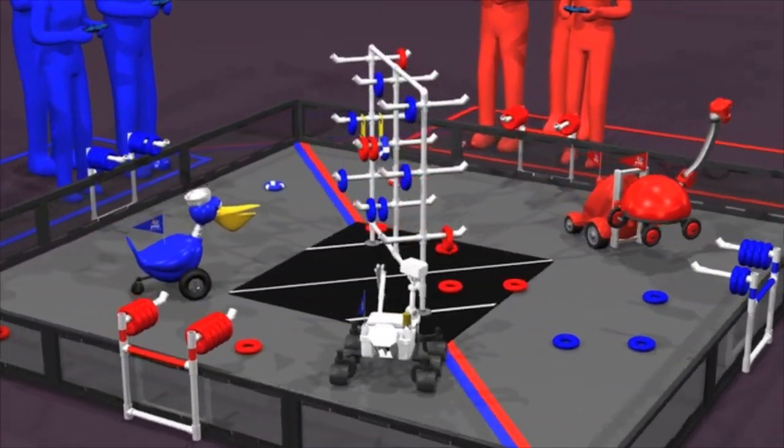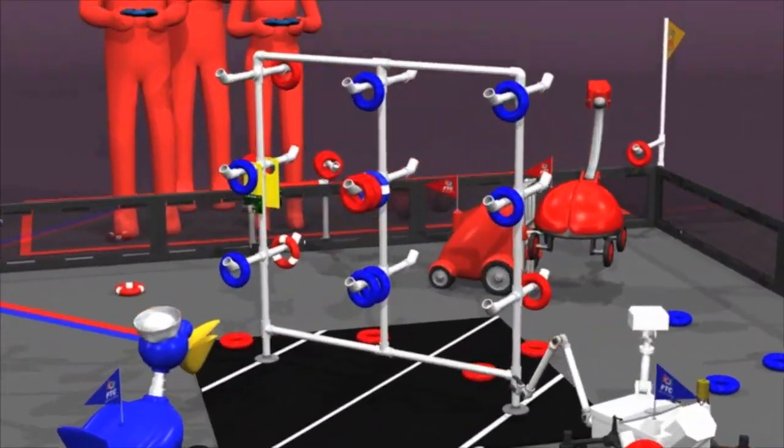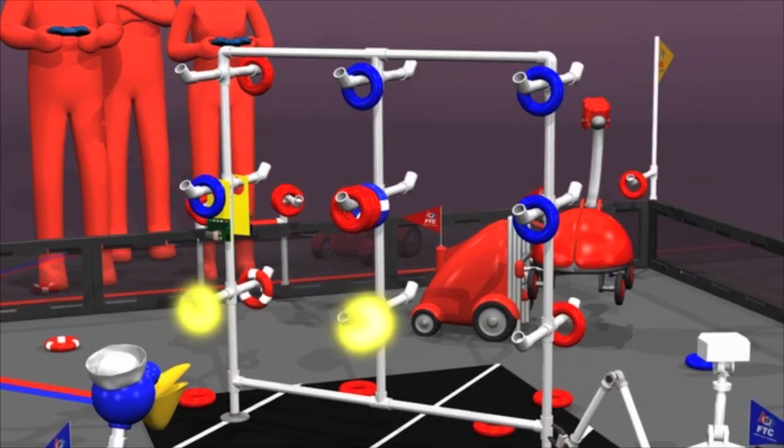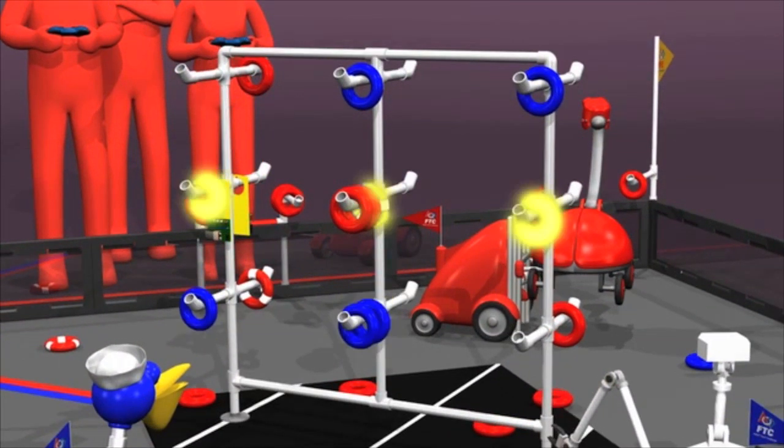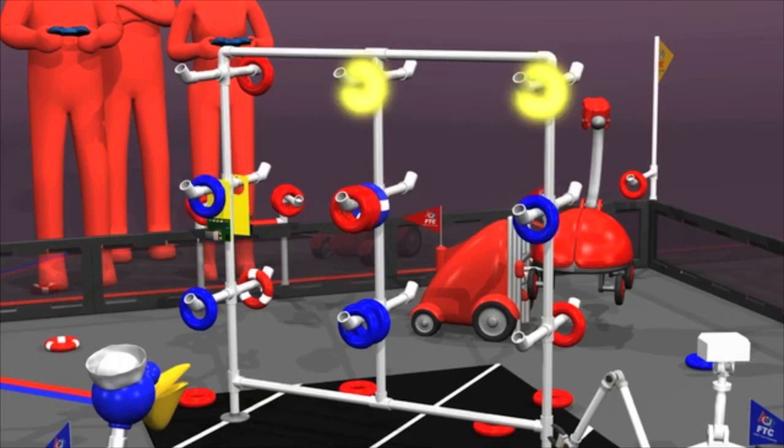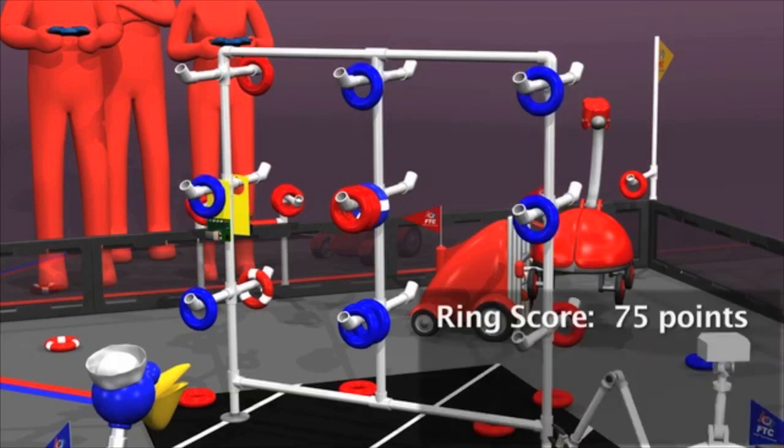The match is over, so let's add up the scores. We see the blue alliance has three rings on the bottom pegs for 15 points, three on the middle pegs for 30 points, and two on the top for 30 points. That's 75 points total.